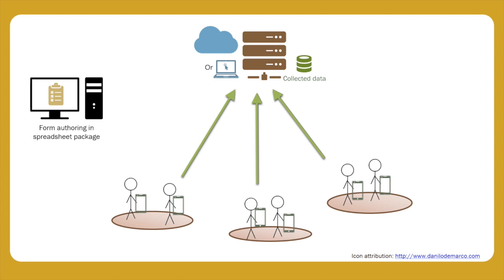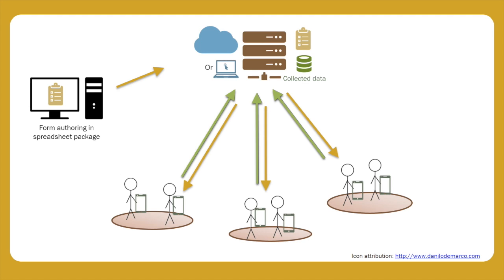The form then needs to be passed to the enumerators somehow. A sensible approach is to transfer the forms to your central repository, so the enumerators can all download the blank forms from the one location. Finally, you, the researcher, will need to access the collected data in a format suitable for processing and analysis. If this repository is an online server, then your data will be easily accessible through an internet connection, even if you are in a completely different part of the world to the actual fieldwork.